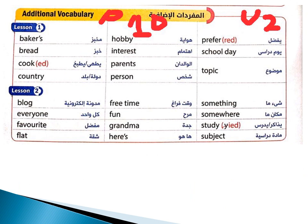لما نحط لها أباستروف اس، كلمة بيكر اللي هي خباز بتبقى مخبز. بوتشر - جزار، لو ضفنا لها أباستروف اس تبقى جزار خبز بريد.